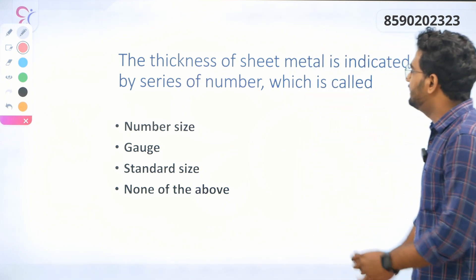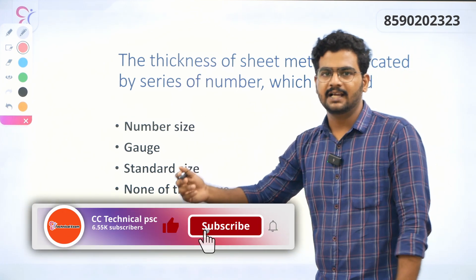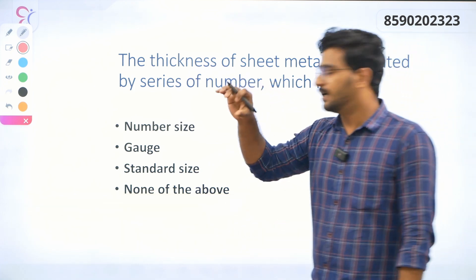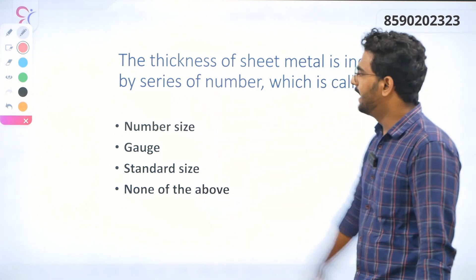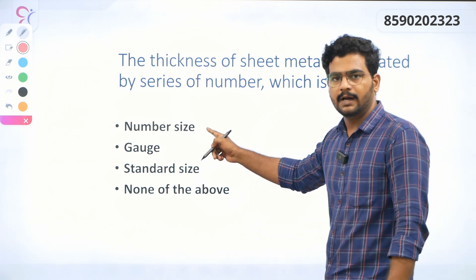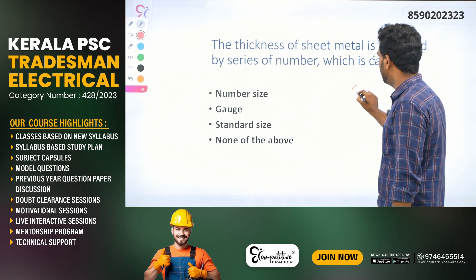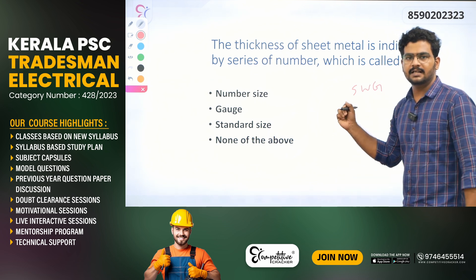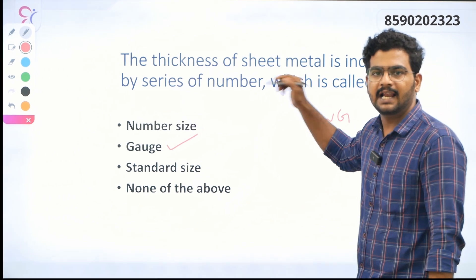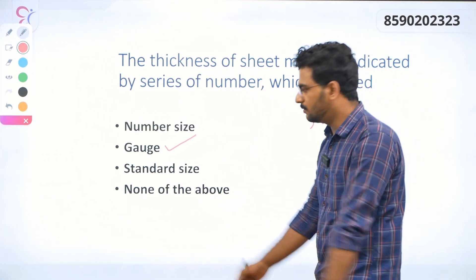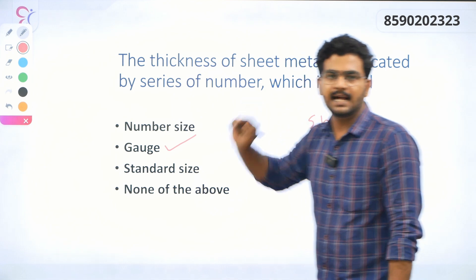One question is: The thickness of sheet metal is indicated by a series of numbers which is called — that is, sheet metal thickness. The answer is not number size. It is gauge — SWG, which stands for Standard Wire Gauge. That is the answer.